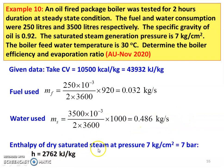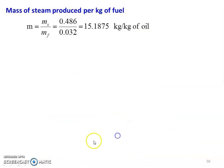Enthalpy of dry saturated steam at the given pressure of 7 kilograms per centimeter square, which is approximately equal to 7 bar, is 2762 kilojoules per kilogram from the steam table. Mass of the steam produced per kilogram of fuel: M equals MS divided by MF, which is 0.486 divided by 0.032, equal to 15.1875 kilograms per kilogram of oil.